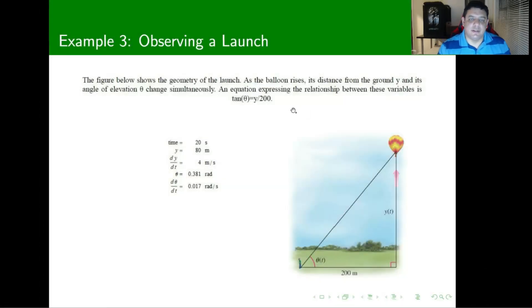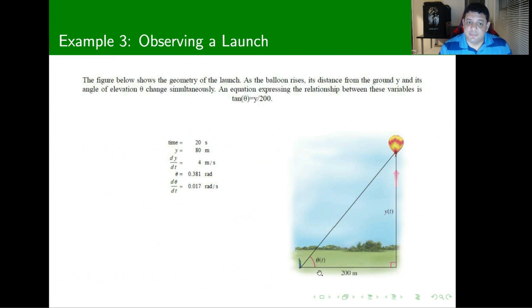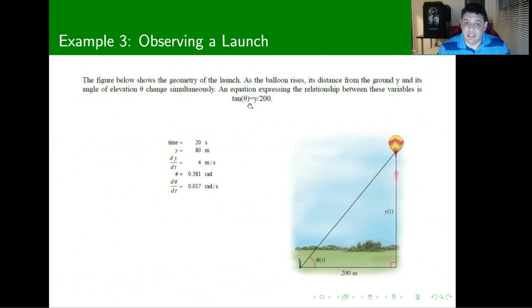Here we have another example of how related rates operates. In the figure below, we show the geometry of a launch for a balloon. The balloon is rising and the distance from the ground can be described as y. The angle of elevation from a certain observer is called theta, and the distance from the observer to the point where the balloon was launched is 200. An equation expressing this relationship is the trigonometric relationship: tangent of theta equals y over 200.